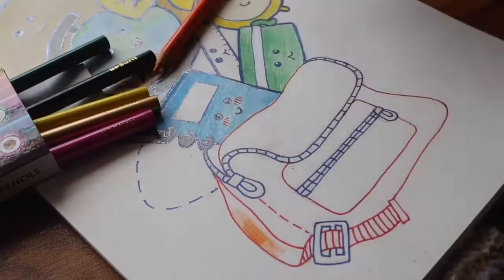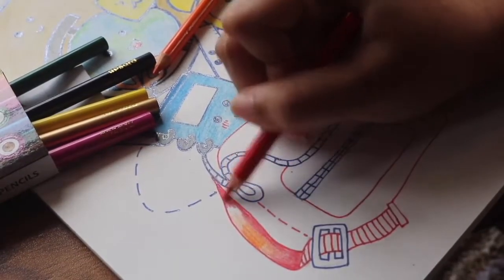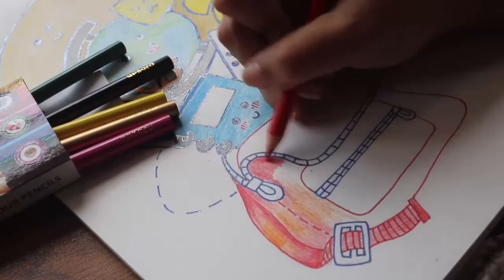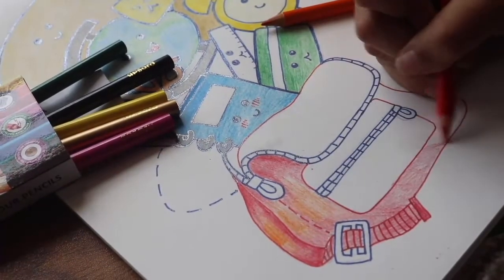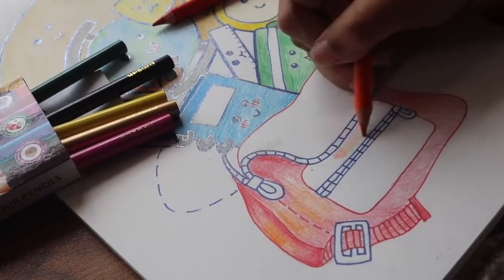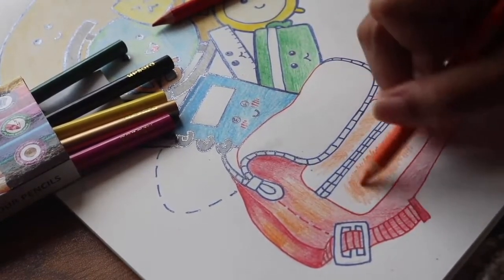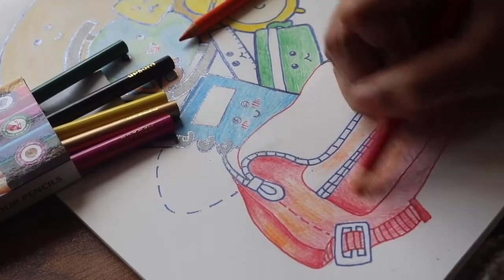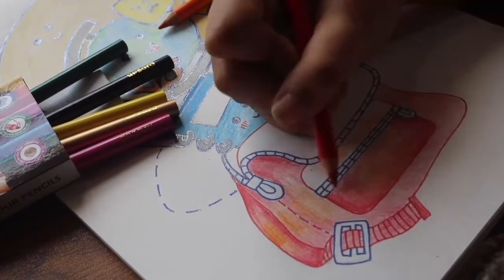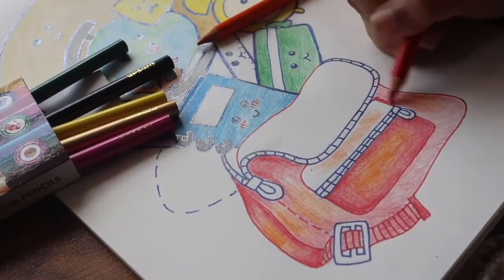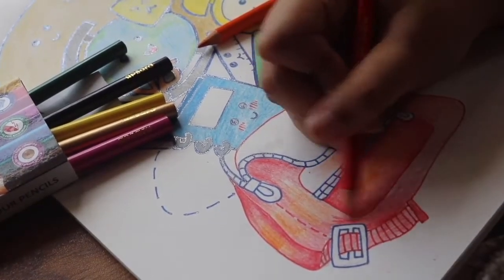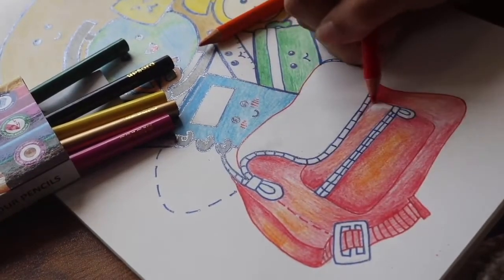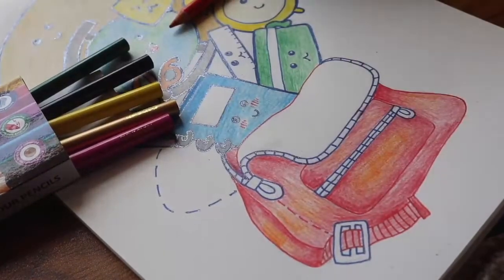Last but not the least is our bag from which the explosion is happening. For this we will be using two colors, one is the orange and the other is the red. For the highlights of the bag use orange color and then go in with the red. Make sure you use different pressures. Make sure you keep the movement unidirectional for both the colors and keep changing pressure based on the area you are coloring.